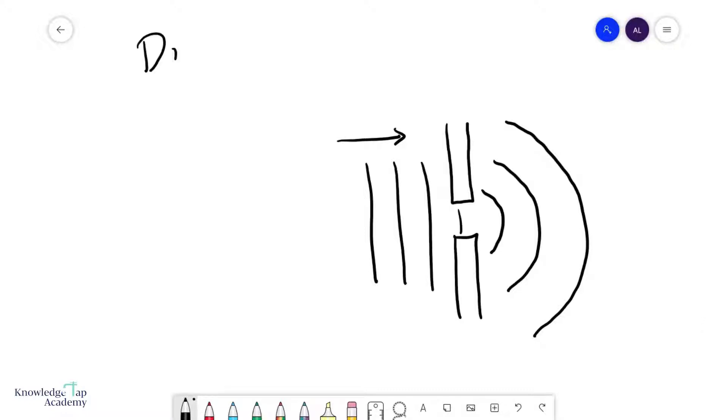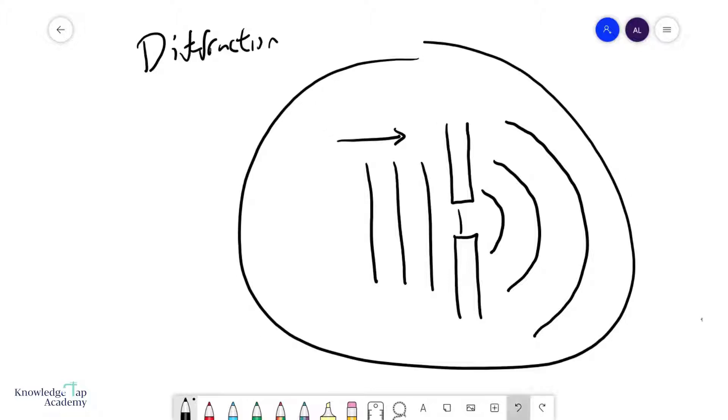We're going to talk about diffraction now. This is a very important concept in waves and superposition. What is diffraction? Basically, when a wave goes through a slit, this is your wave traveling in this direction. It has a wavelength lambda and...